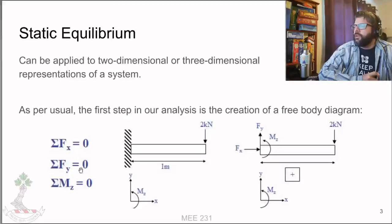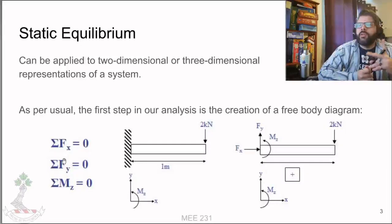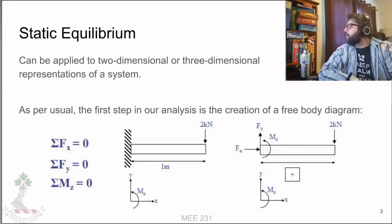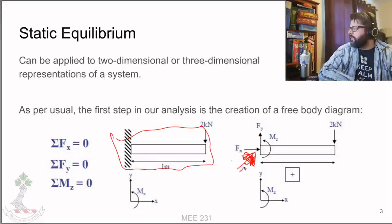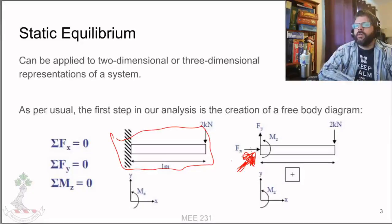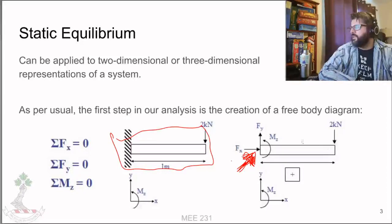For two-dimensional systems, the first thing we do is create a free body diagram. We take our representative diagram and place the supports with the types of forces and moments that support generates in order to resist movement. In this case, this is a fixed support, so it would resist movement in the x-direction, resist movement in the y-direction, and it also resists rotation.